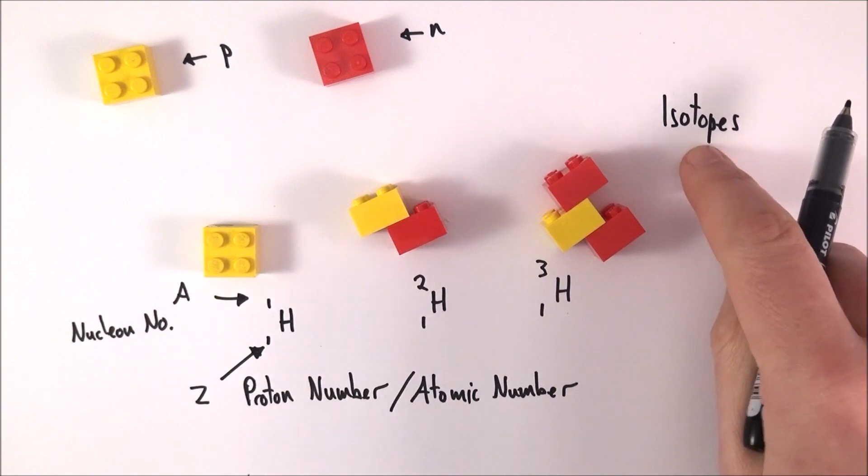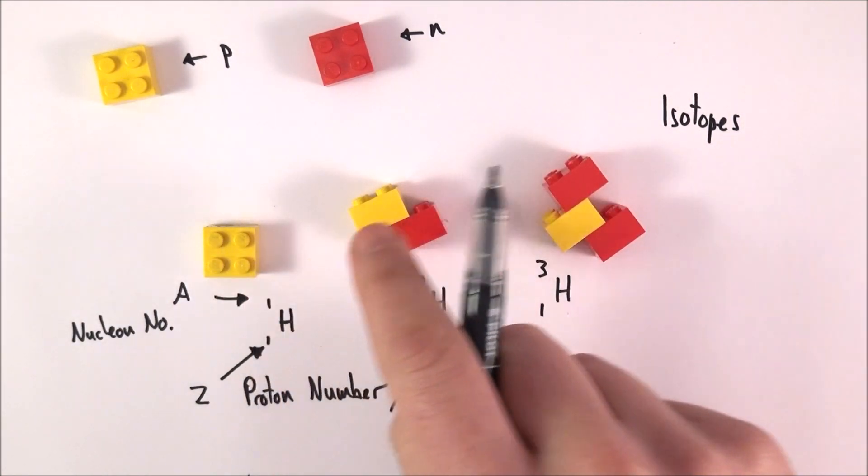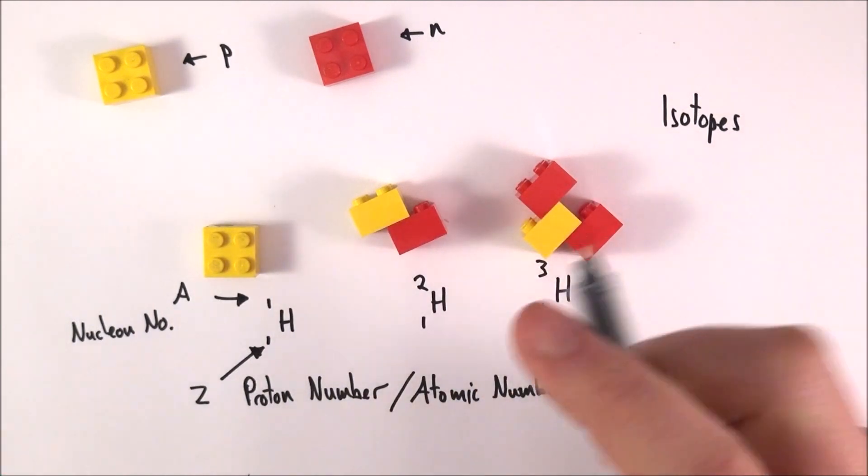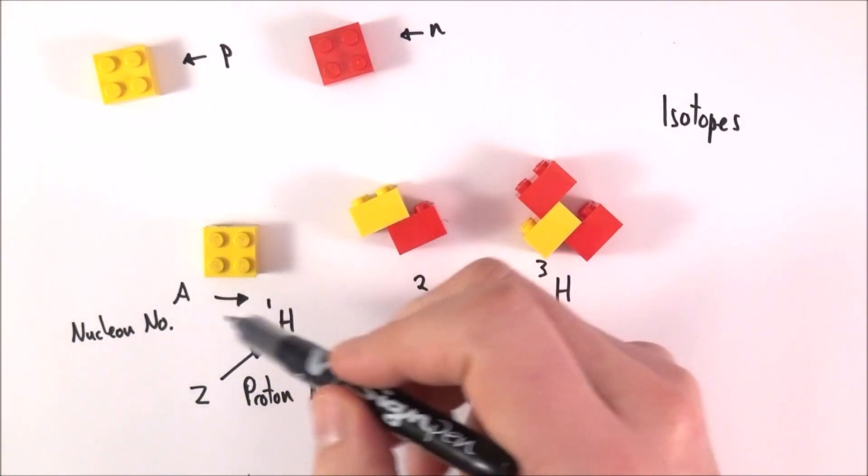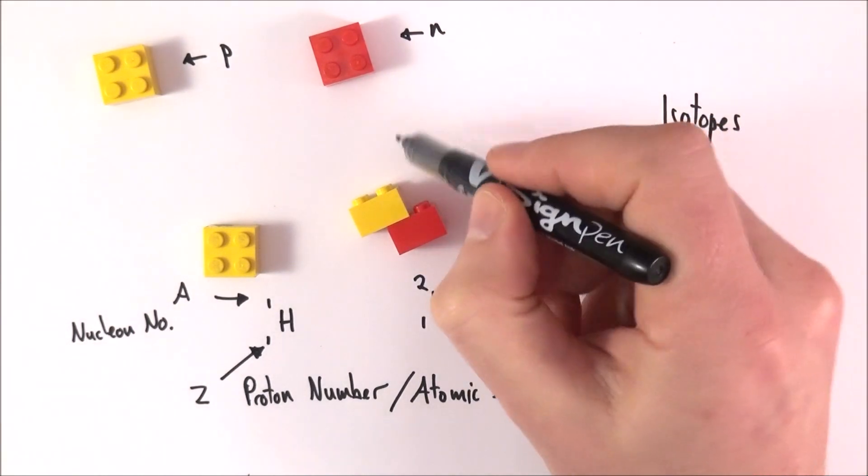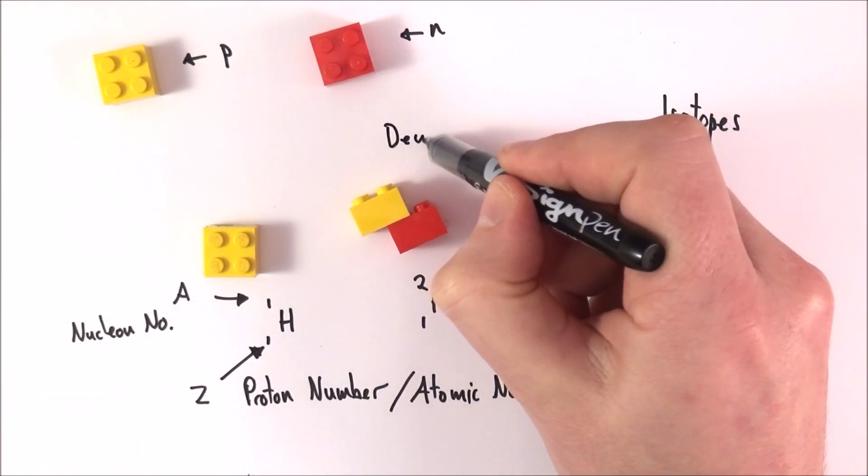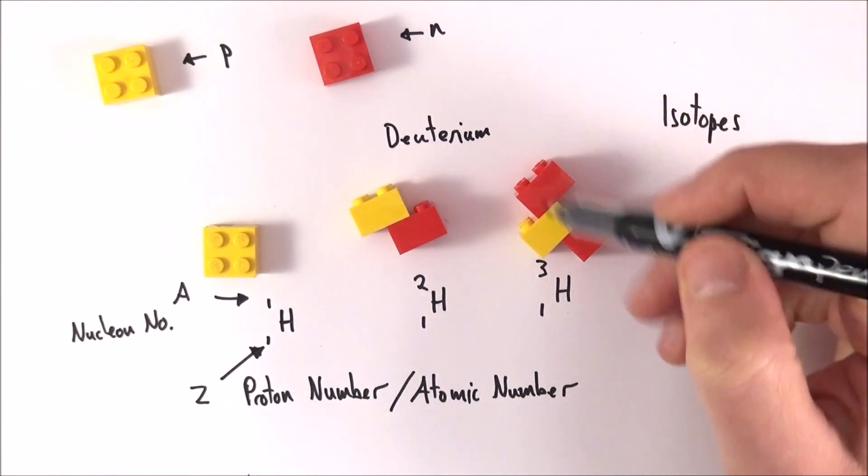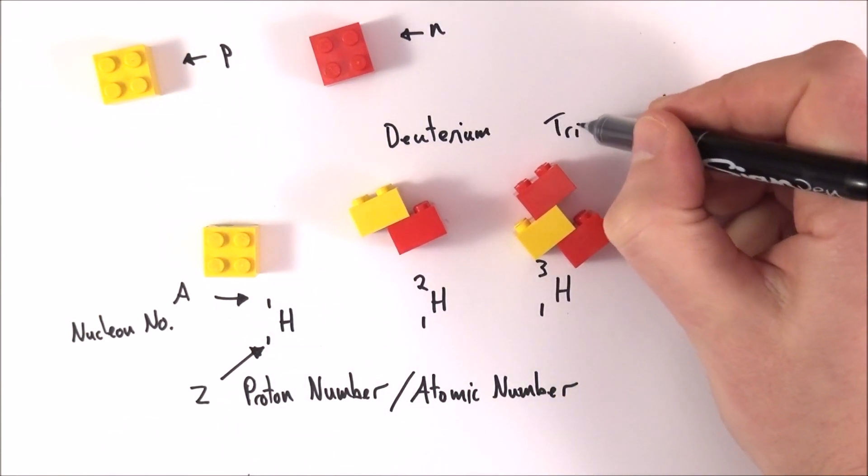An isotope is an element that has a different number of neutrons. When we talk about hydrogen in particular, we have our normal bog-standard hydrogen that most of the universe is made out of. We also have one that has two things in the middle, which is called deuterium, and finally the one that has three things in the middle is called tritium.